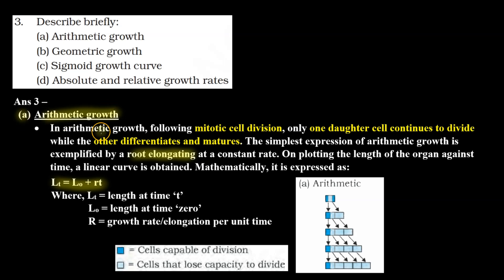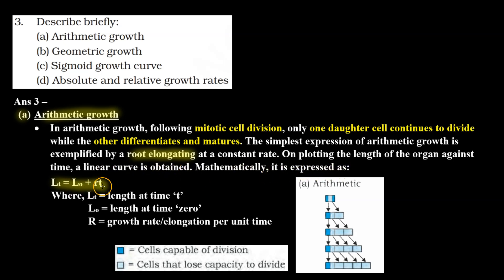So answer A is arithmetic growth. Following mitotic cell division, only one daughter cell continues to divide, while the other differentiates and matures. The simplest expression of arithmetic growth is exemplified by a root elongating at a constant rate. On plotting the length of the organ against time, a linear curve is obtained. Mathematically, it is expressed as Lt = L0 + RT, where Lt is length at time t, L0 is length at time 0, and R is growth rate or elongation per unit time.